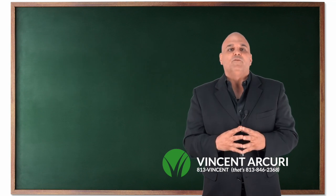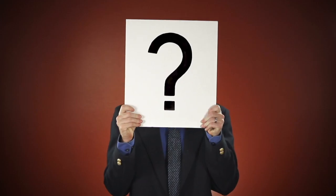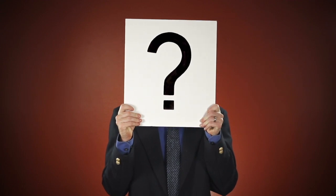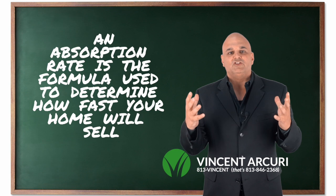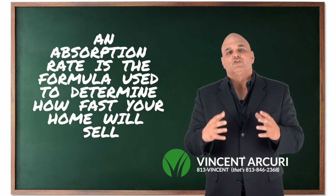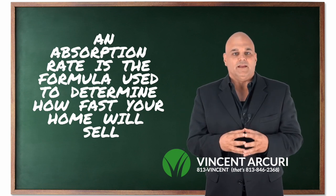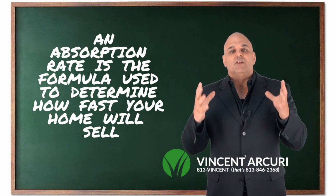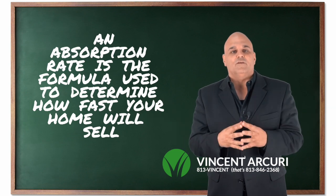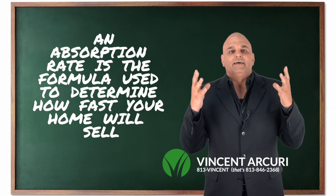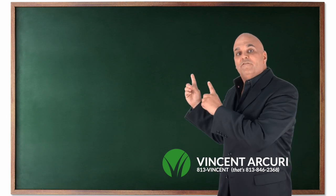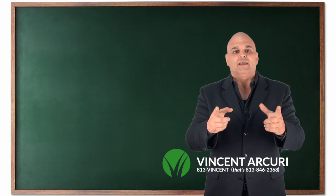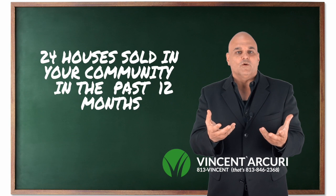It's a very simple formula, and I'm going to try to explain it to you briefly right now. An absorption rate is a simple financial calculation that economists use to determine the strength of the real estate market. It takes into account — in this fantasy scenario, if you will — the sales in your community. In this example, 24 homes sold in your community of homes that were similar to yours.